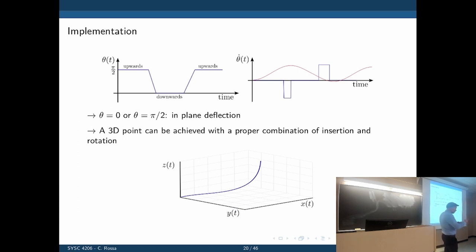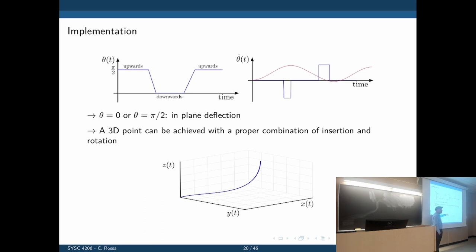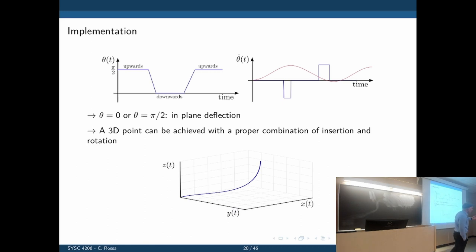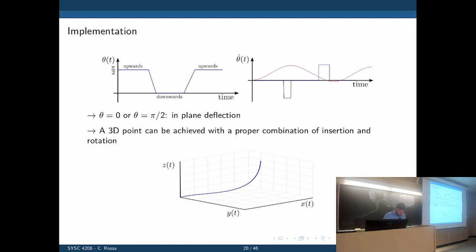We can do continuous rotation and stop midway, finding a proper combination of insertion and rotation so that any point in 3D can be reached. Here is a 3D representation — rotations are going beyond zero and 180 degrees, and you can see three-dimensional motion can be achieved.